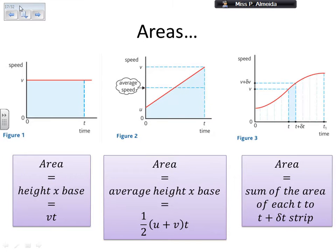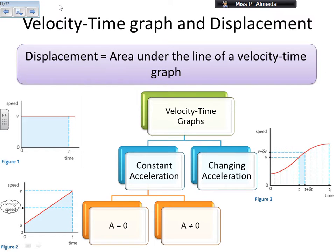When you have a velocity-time graph, you can calculate displacement very easily. The displacement is going to be the area under the line of a velocity-time graph. You can have two types: constant acceleration or changing acceleration. If acceleration is constant and equal to zero, you have a straight horizontal line — constant speed. If acceleration is a constant non-zero value, you have a straight diagonal line, so your velocity is either increasing or decreasing at a constant rate.